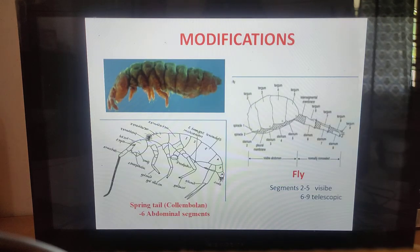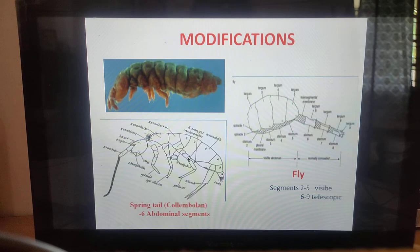Reduction in the number of abdominal segments has taken place in many insects. In springtails, only six segments are present. In the housefly, only segments two to five are visible and segments six to nine are telescoped within others.